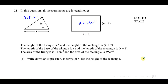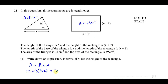Part (a) asks us to write down an expression in terms of x for the height of the rectangle. The area of a rectangle is length times width, so we can say x plus 1 multiplied by h plus 2 is equal to 39.